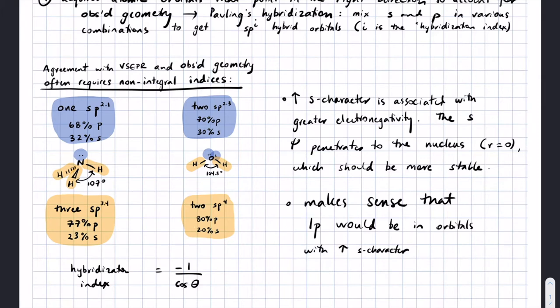We talked about how you don't need to have integral values for the subscript on the P for hybrid orbitals. You're used to SP1, SP2, and SP3 orbitals, but that hybridization index is more of a number that tells you the relative ratio of one of these orbitals to another. For example, SP3.4 is one part S, 3.4 parts P, and those are three orbitals that are 77% P.